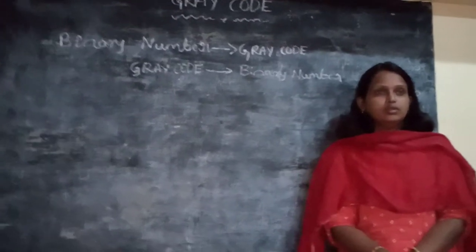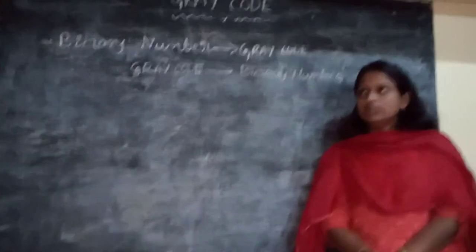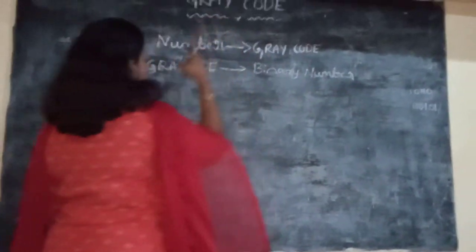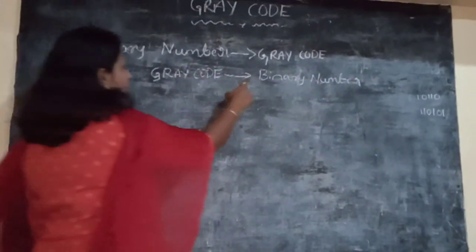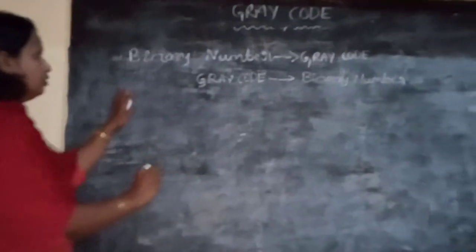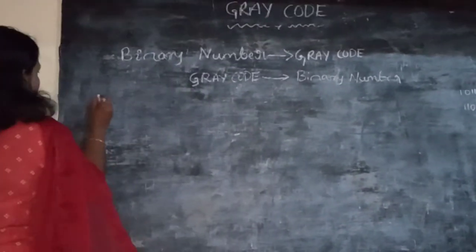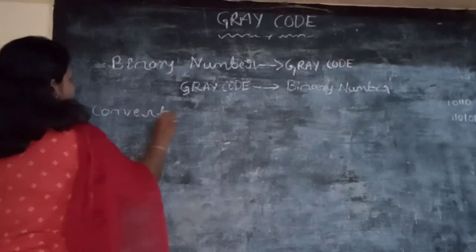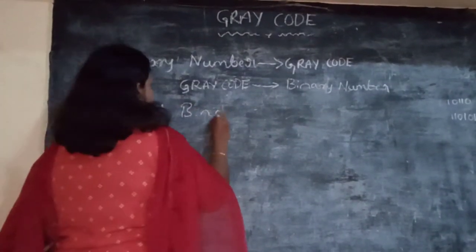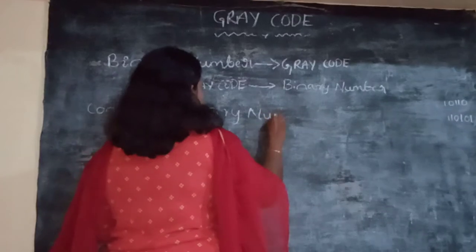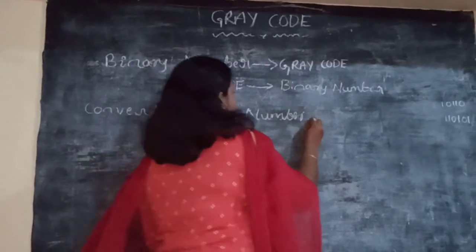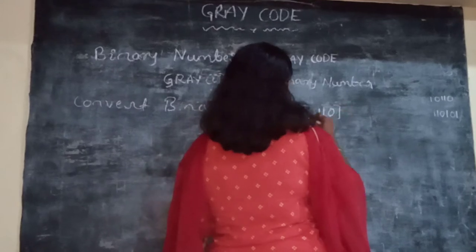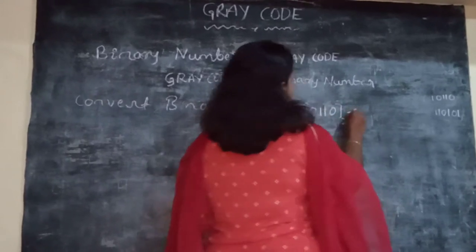Good afternoon. Today we will learn how we can convert a binary number into grey code, as well as grey code into a binary number. We will take for example how we can convert binary number 10110 into grey code.